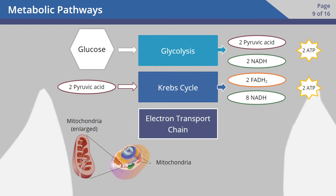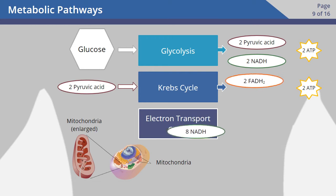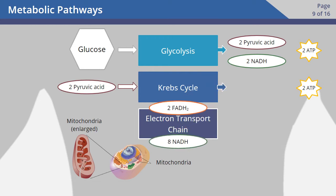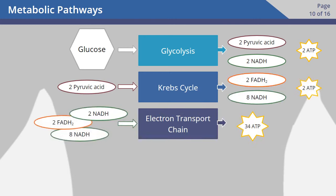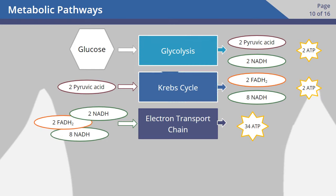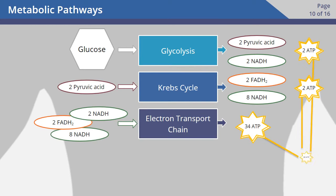Watch as we drag the NADH and FADH2 to the metabolic pathway, where they will be processed. In the presence of oxygen, aerobic metabolism includes glycolysis, the Krebs cycle, and the electron transport chain. This results in an energy gain of 38 ATP per glucose.